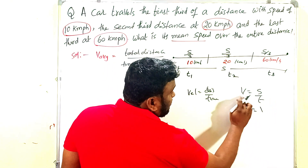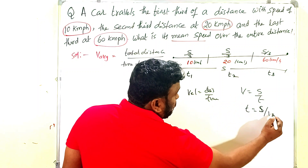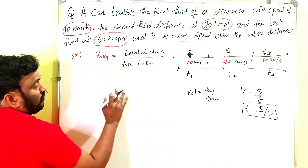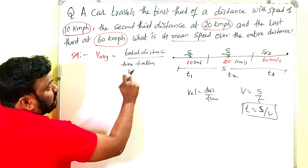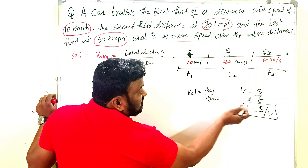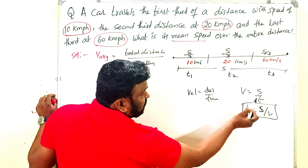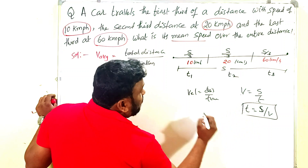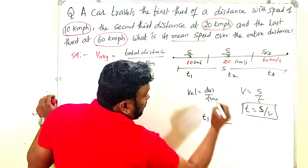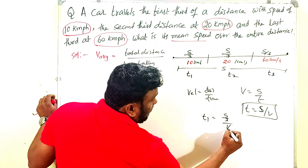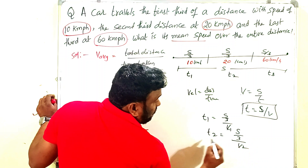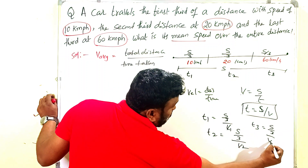From v = s/t, we get t = s/v. So for the first part, t1 = (S/3)/v1. Similarly, t2 = (S/3)/v2, and t3 = (S/3)/v3.